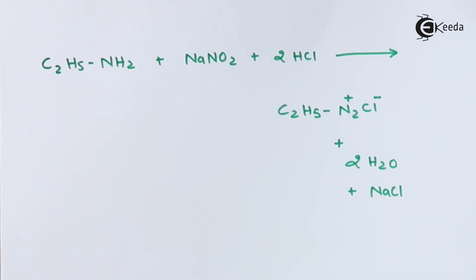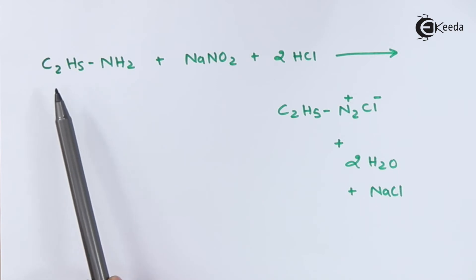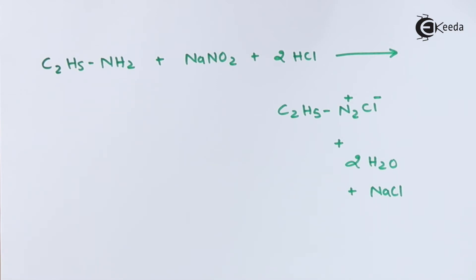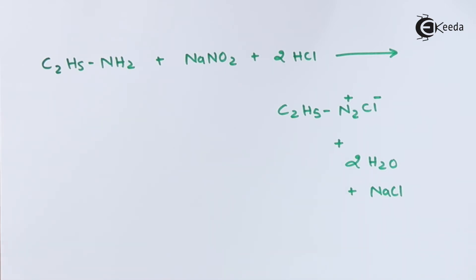However, this reaction is not possible if we consider methyl amine. Methyl amine cannot undergo the diazotization process, while all other primary amines — whether aliphatic or aryl amines — can undergo the diazotization process. Now let me talk about another example where we consider an aryl amine and see what happens when it undergoes diazotization.